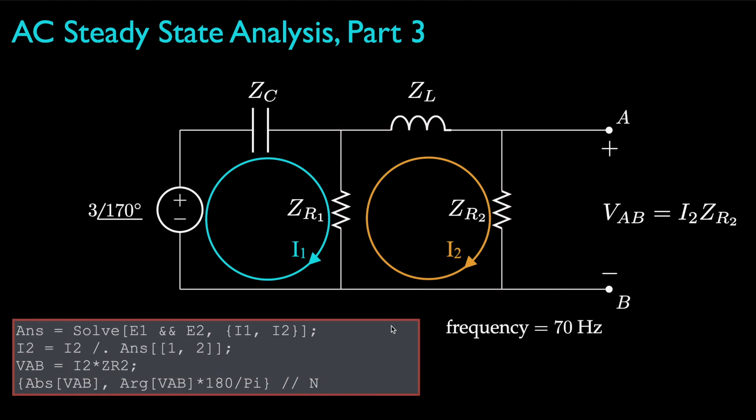Then, if we solve for those two equations for the two unknowns, we can use the value we get for I2 to evaluate the voltage drop from A to B, which in this case turns out to be 1.2582 volts at a phase angle of negative 128.38 degrees.